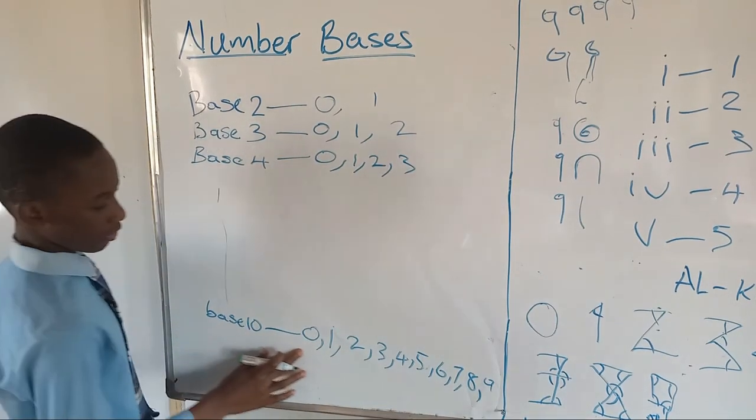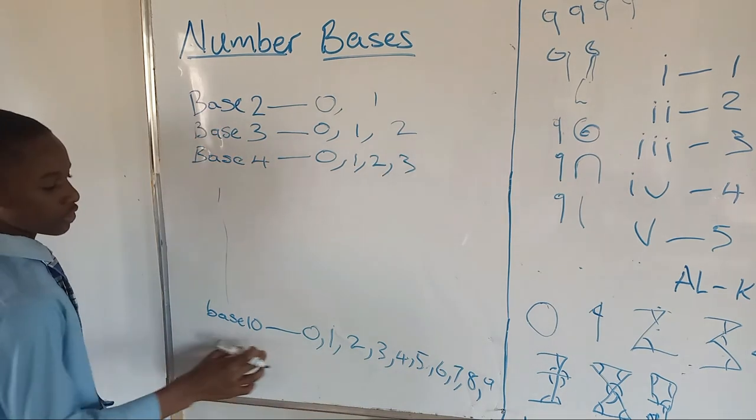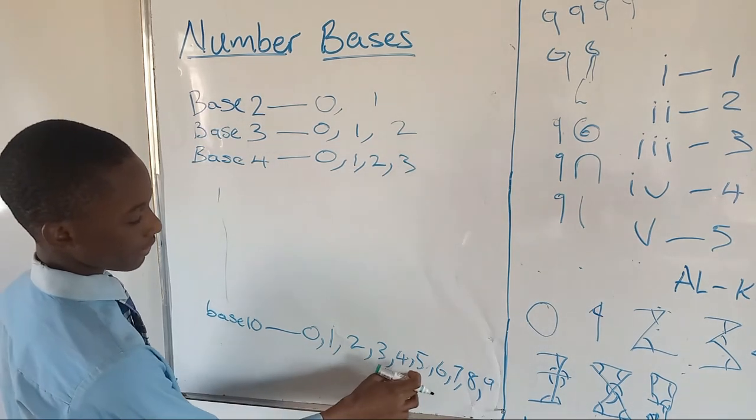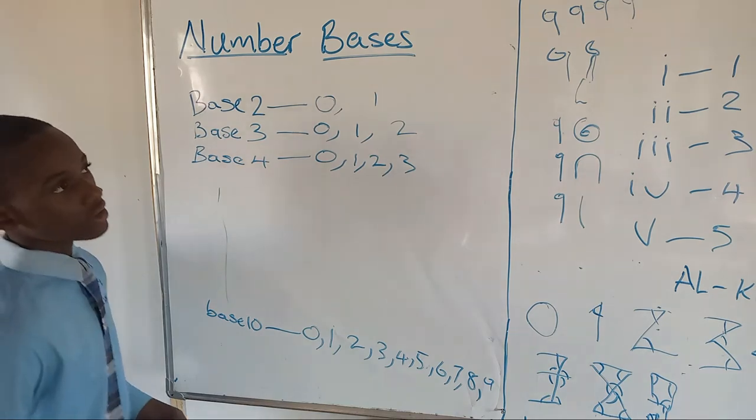This is the base ten number system of counting: zero, one, two, three, four, five, six, seven, eight, nine. Now, let's convert other bases, like base two and base three.